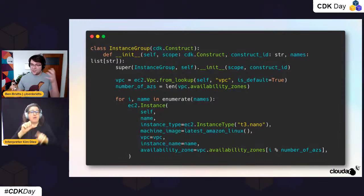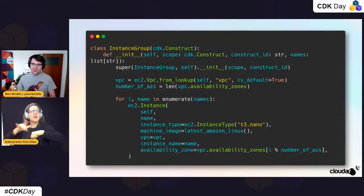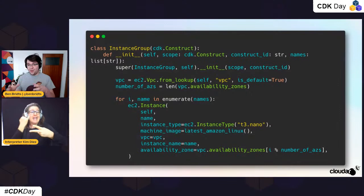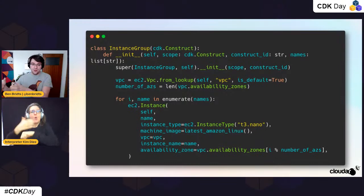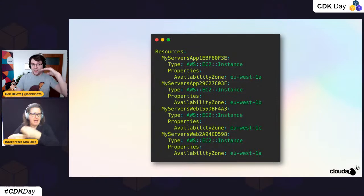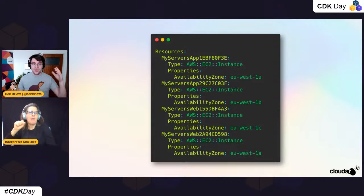The final thing is which availability zone the instances go into. We don't want them all in the same subnet or the same availability zone — that's what would happen if they're all in the same stack, because CDK will always pick the same availability zone. We want them spread out for high availability, since they might end up in a load balancer. And if we didn't do that, all instances would end up in the same subnet and we'd run out of IPs while others remain empty.